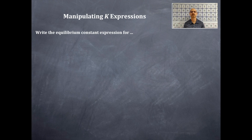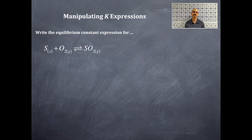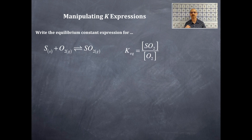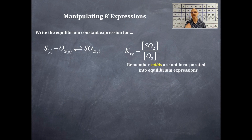We're going to write the equilibrium constant expression for the following reactions. We have sulfur (solid) plus oxygen (gas) produces sulfur dioxide (gas). The double-headed arrows let you know this is an equilibrium reaction. Products over reactants with stoichiometric coefficients as exponents — K-EQ equals [SO2] to the first power divided by [O2] to the first power.